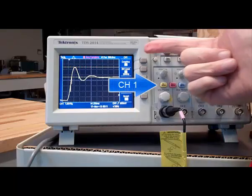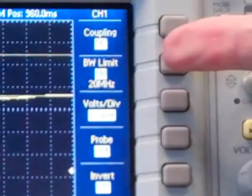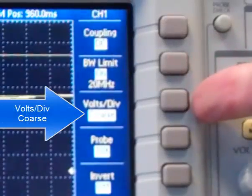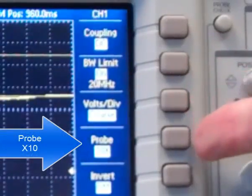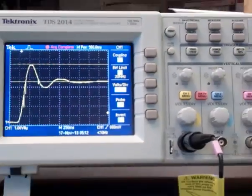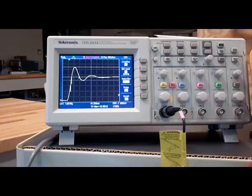Channel 1 should be on DC coupling, bandwidth limit on, course volts per division, probes times 10. Make sure the probe is set for times 10. And then the oscilloscope should be ready to capture this signal. That's all.